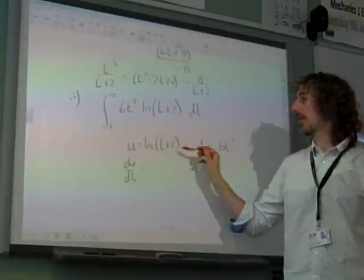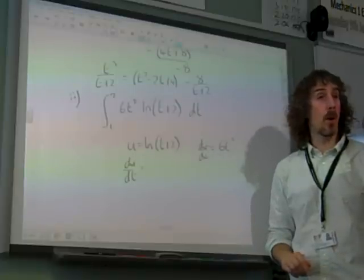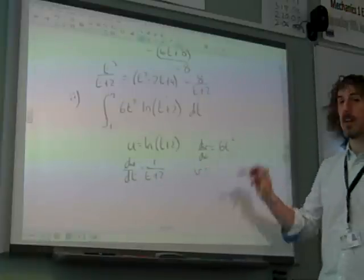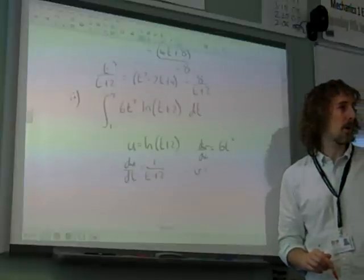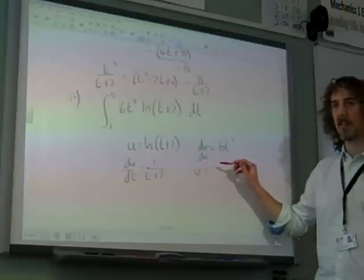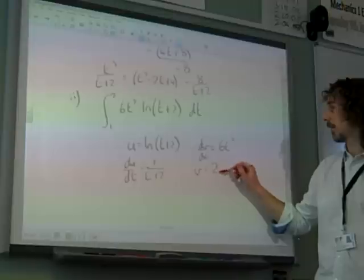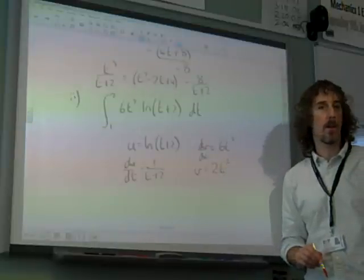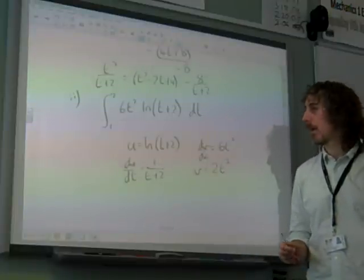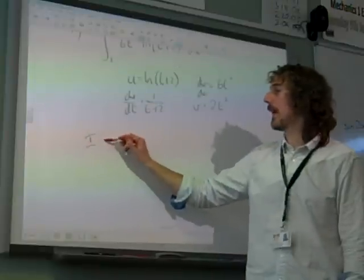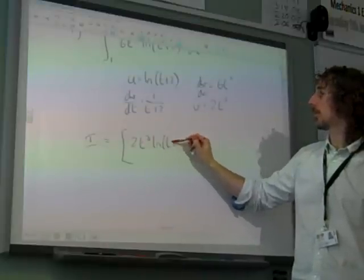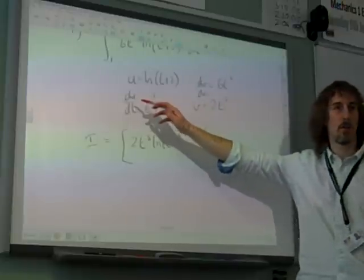So, our u has to be the natural log of t plus 2. And the dv by dx bit is the 6t squared. Differentiate Ln t plus 2 and we get 1 over t plus 2. Integrate 6t squared. And this was a bit frustrating because quite a few people made a little mistake in integrating this. Add 1 to the power, divide by the new power. That's 6t cubed over 3. So, it's 2t cubed. There were quite a few bizarre 3t cubed in there. Or just the wrong power creeping in. So, we put this together then.